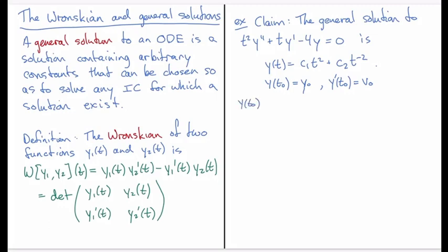We plug in t₀ into y, and we get c₁t₀² + c₂t₀⁻² equal to y₀. Then we have y'(t₀) is going to be, first let's take the derivative, so we have 2c₁t₀ and minus 2c₂t₀⁻³, and that has to be equal to v₀. So you can see here we have a system of two equations. We're trying to figure out if we can always choose arbitrary constants c₁ and c₂ to solve any initial condition.